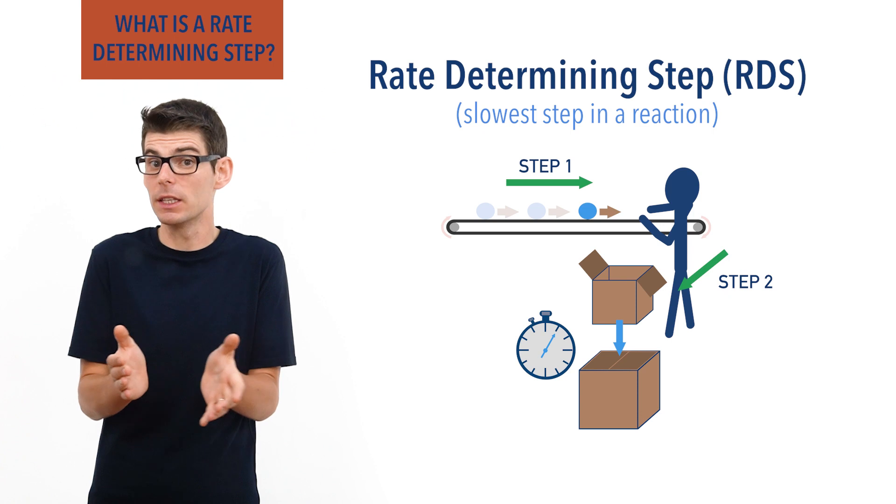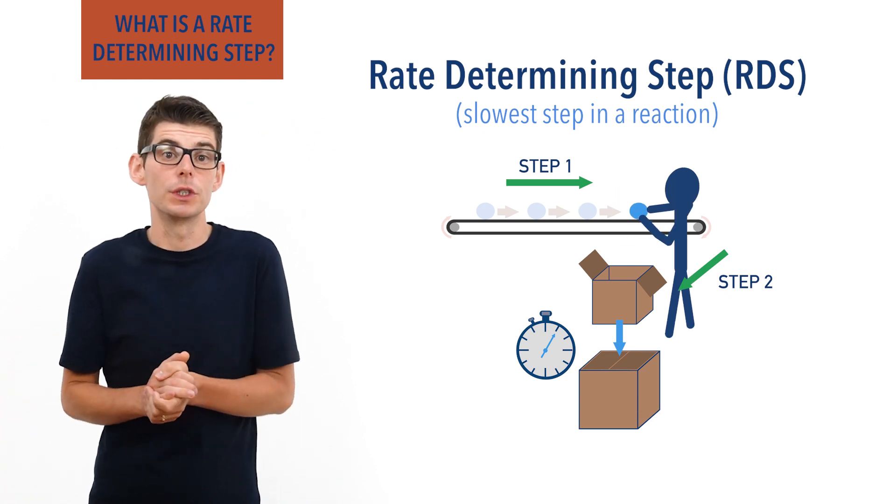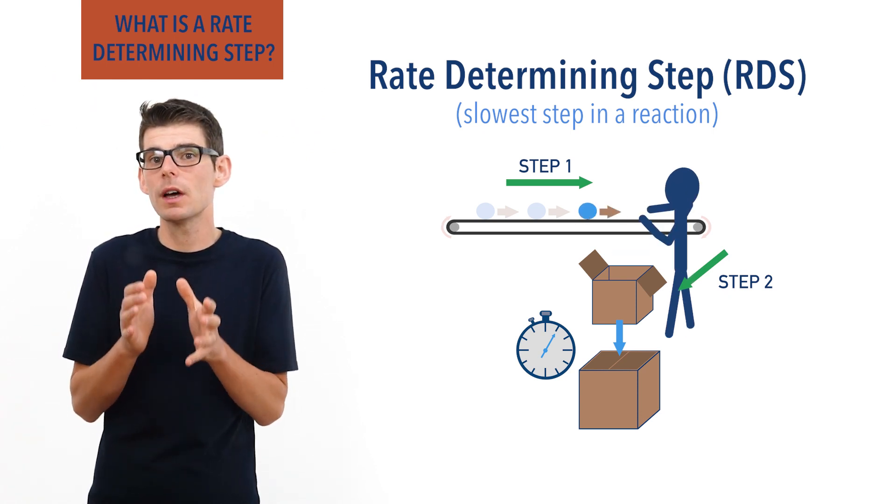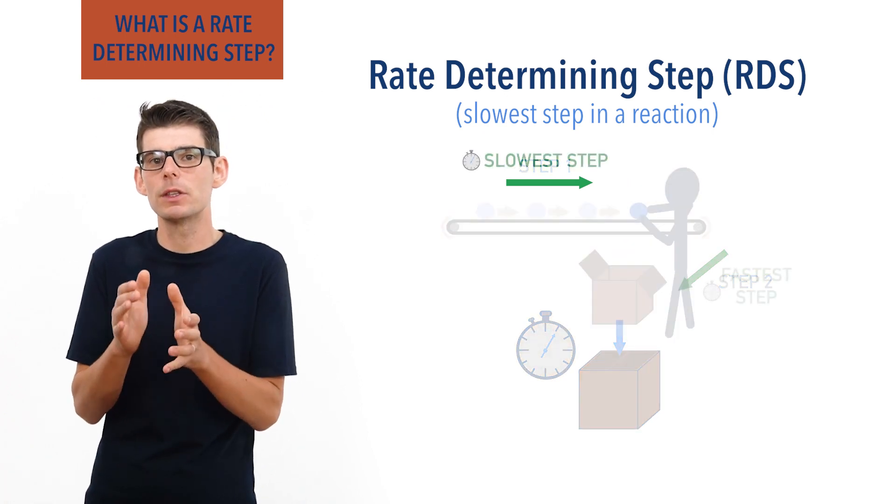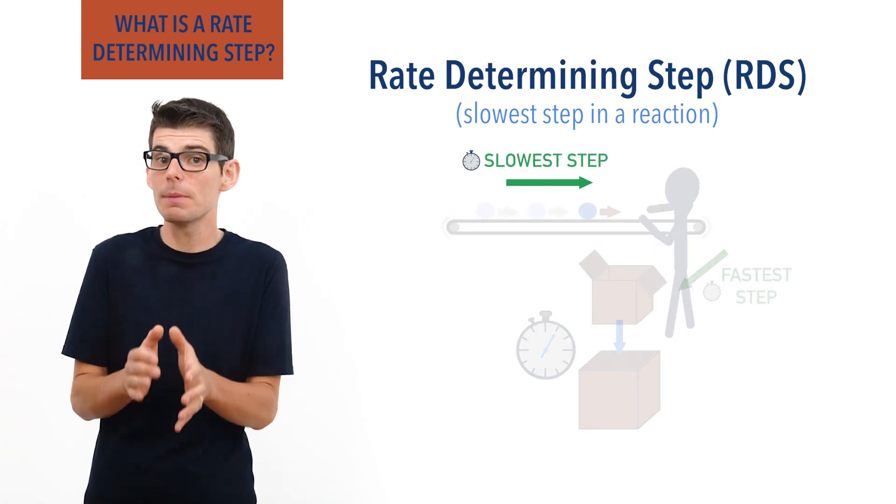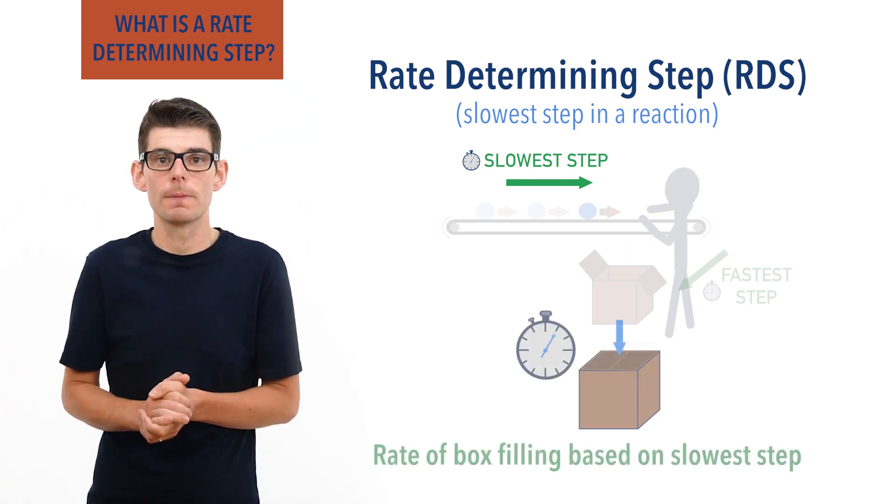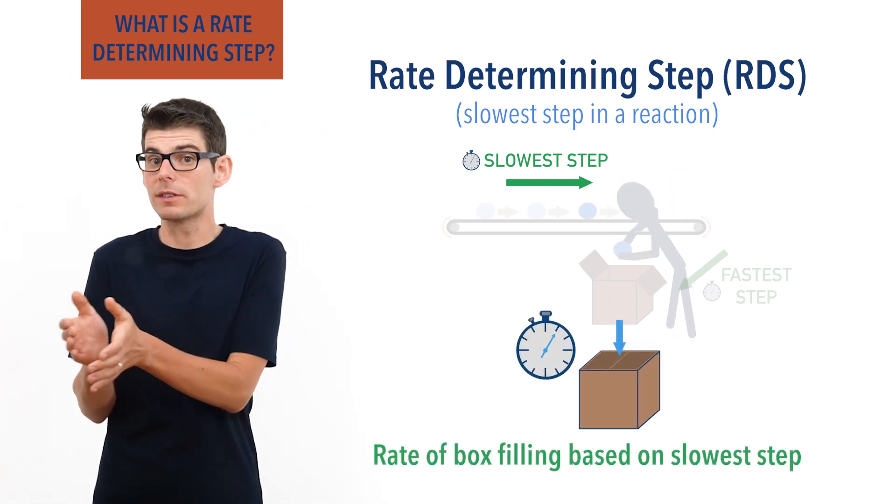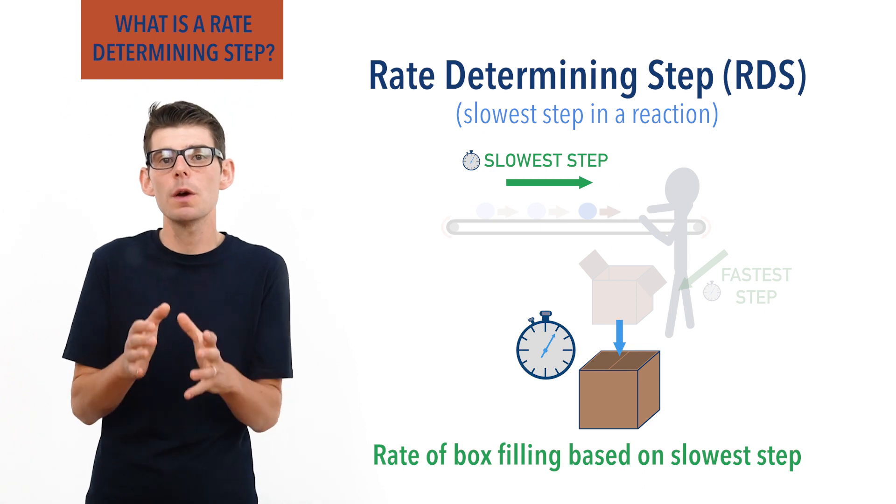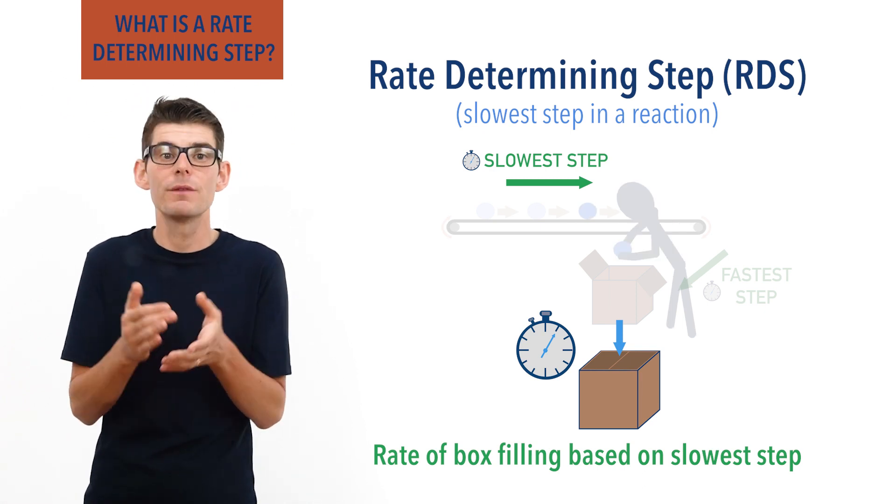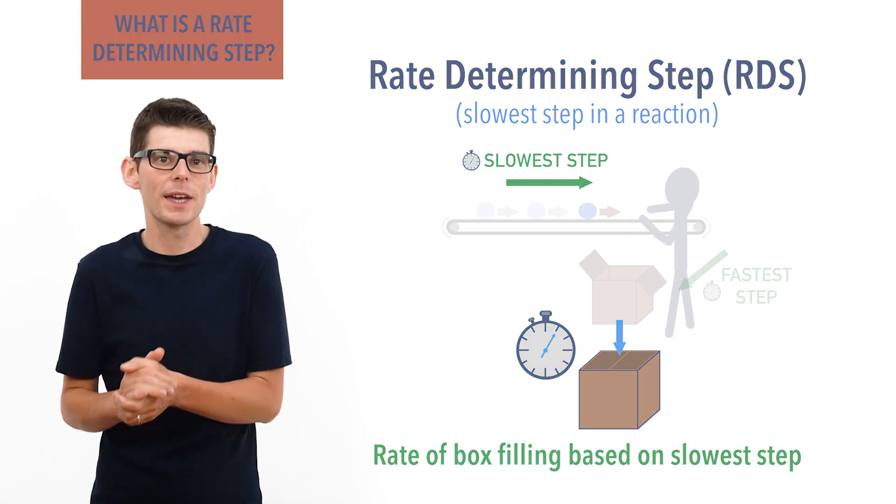As you are packing them faster than they can travel to you, meaning the traveling of the item on the conveyor is the slowest step in the whole process and determines the overall rate at which the items can be packaged. Just like in a multi-step reaction, it is the slowest step or stage occurring that will determine the reaction rate.